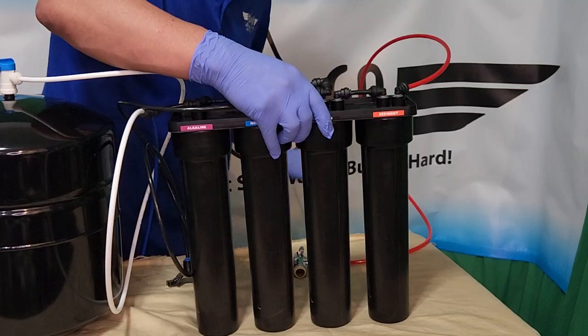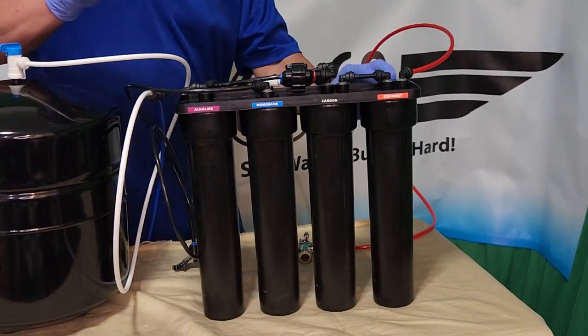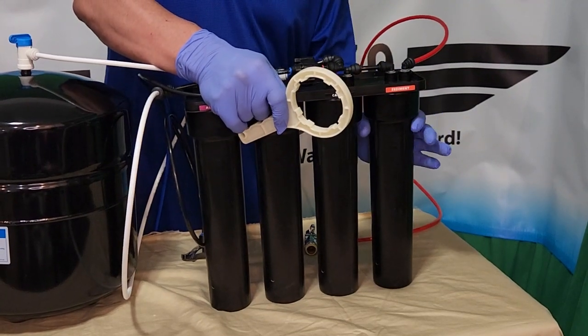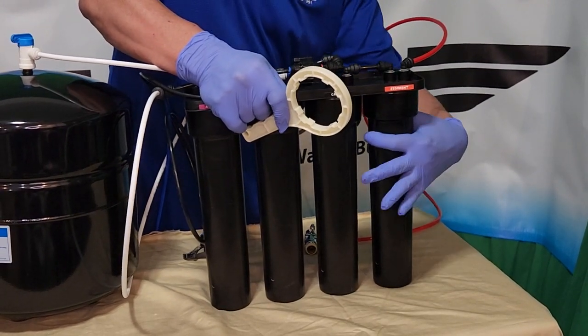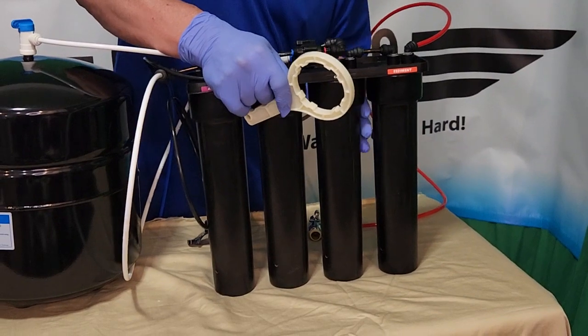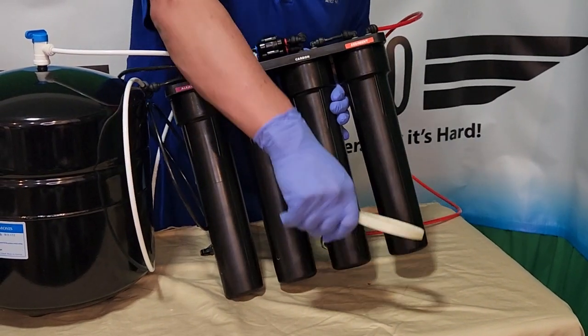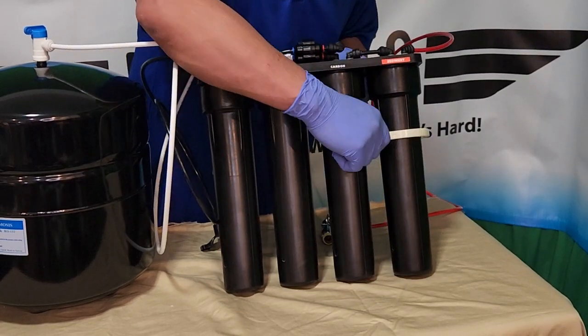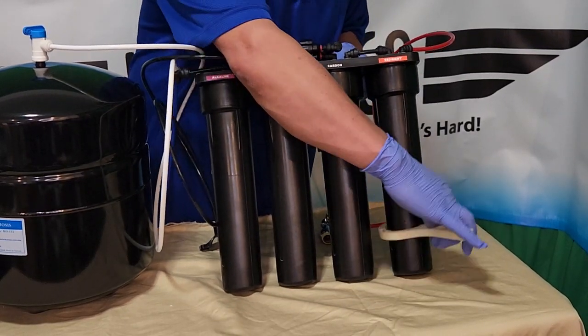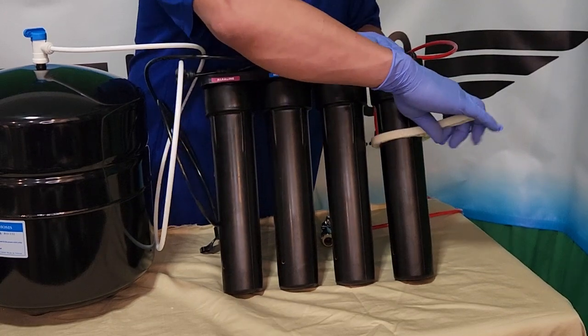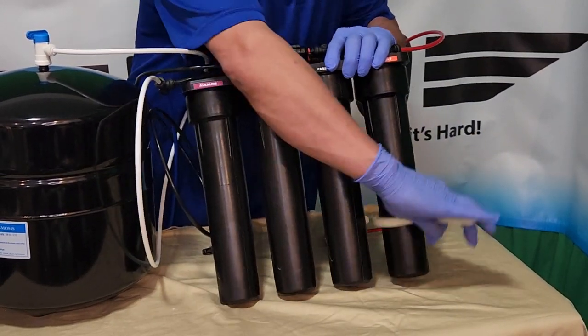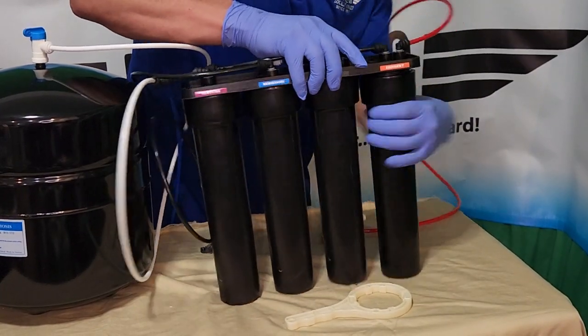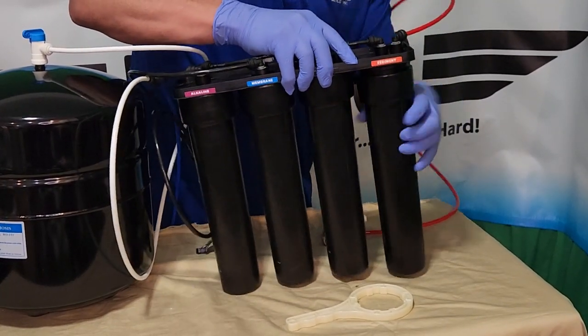And here you have your four cartridge housings. Take your filter wrench. If you don't have one of these, a big pair of pliers, anything that gets around this canister. You're going to turn it, but righty tighty, lefty loosey doesn't apply here because you're turning the base, not the lid. So this is the way you would loosen it. Sometimes it's pretty tough. You just got to bear down on it. Undo it.